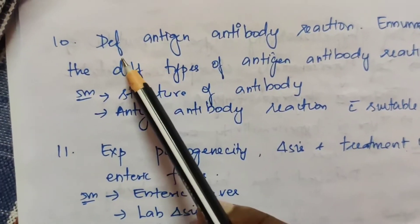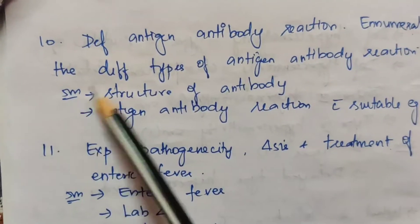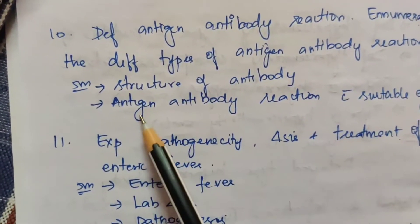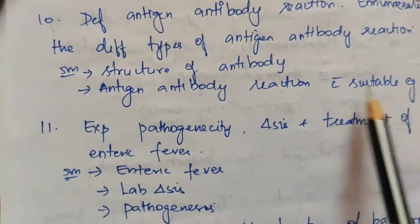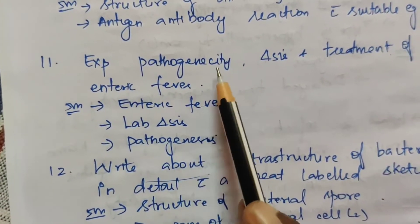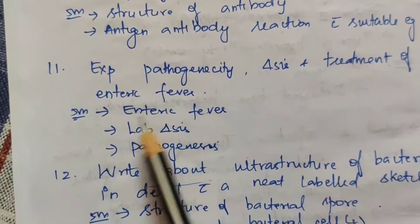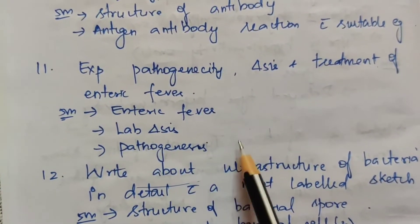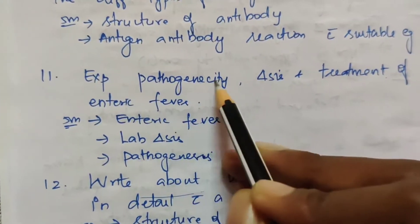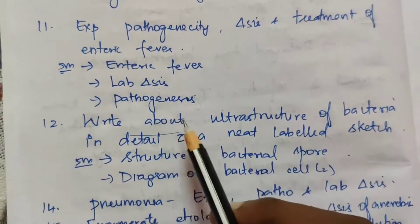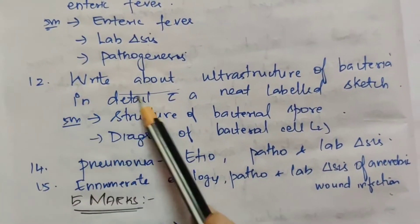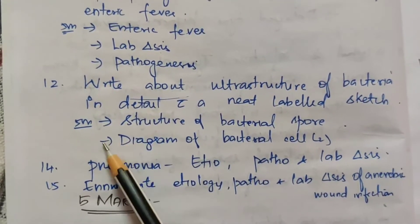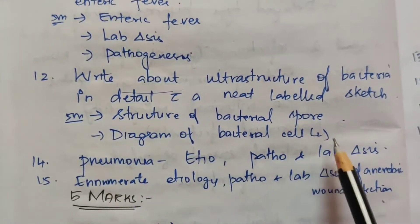The tenth topic: define antigen-antibody reaction and enumerate the different types. For 5 marks: structure of antibody and antigen-antibody reaction with suitable examples. The eleventh topic: explain pathogenicity, diagnosis, and treatment of enteric fever. For 5 marks: enteric fever, lab diagnosis of enteric fever, and pathogenesis of enteric fever. The twelfth topic: write about the ultrastructure of bacteria in detail with a neatly labelled diagram. For 5 marks: structure of bacteria and diagram of bacteria.